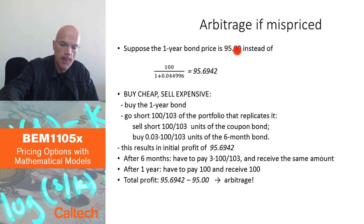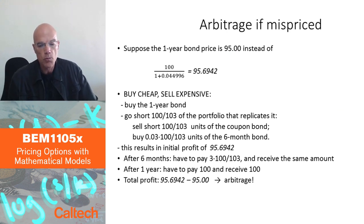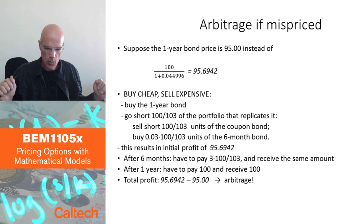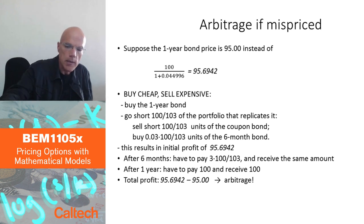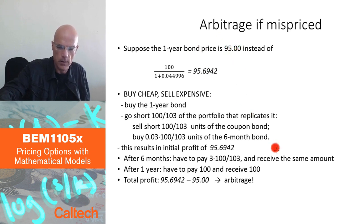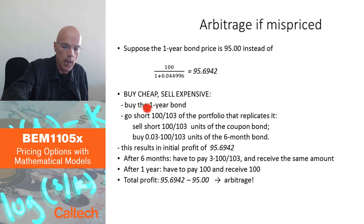It's always the same principle when looking for arbitrage: buy cheap, sell expensive. Here, the one-year zero coupon bond appears relatively cheap compared to its fair value, so I buy it. Then I hedge with a short position in something else.